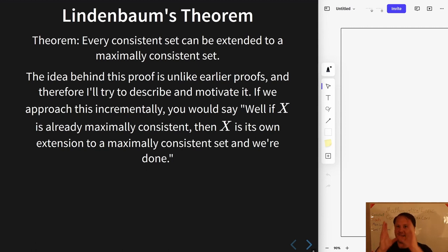So intuitively, if you want to take a consistent set and extend it to some maximally consistent set, the most obvious naive first thing to do is to just grab some formula such that neither it nor its negation is in the set and enter it into the set.